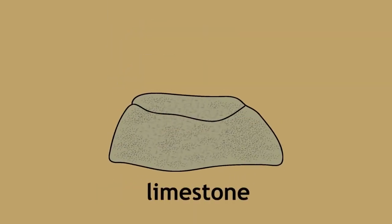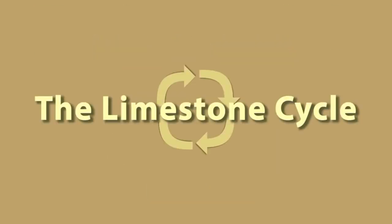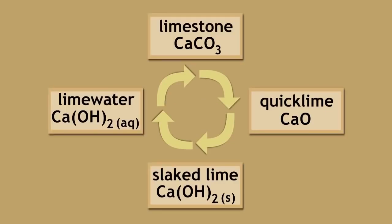In summary, limestone is a sedimentary rock with a high percentage of calcium carbonate formed from the compression of deposited dead marine organisms. The limestone cycle involves the formation of quicklime, slaked lime, and limewater and limestone once again.